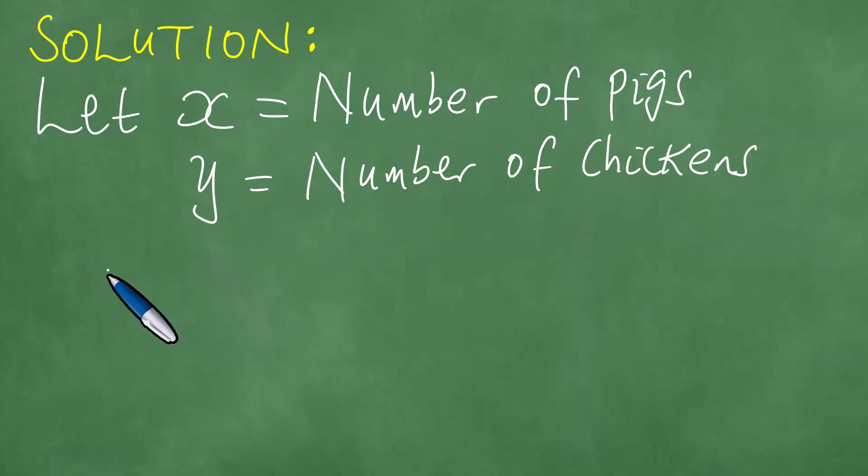So that in the end, we have X plus Y equals 40, because there are 40 pigs and chickens in the farmyard.